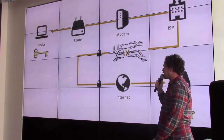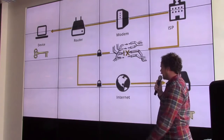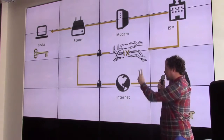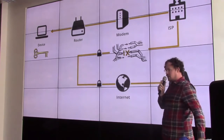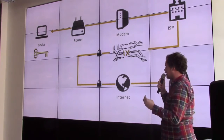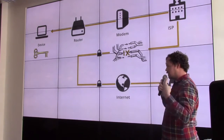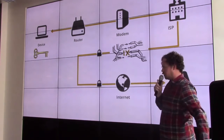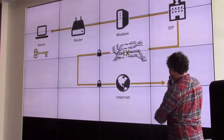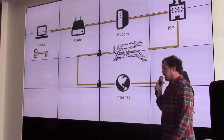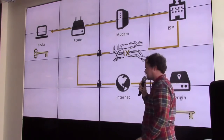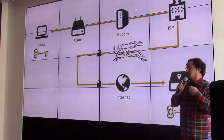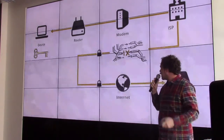Messages are encrypted with what's called a symmetric key. Basically both sides have the same key. You scramble the data with the key and it goes all the way through, safe the whole way. Then the other side uses the same key to unscramble it. And this is the basic concept of how encryption on the web works.